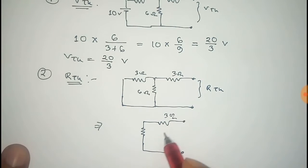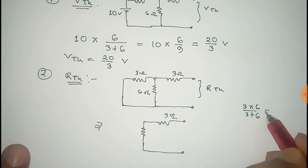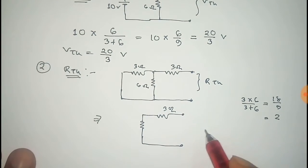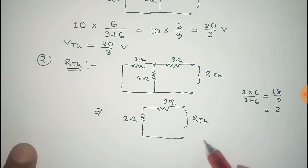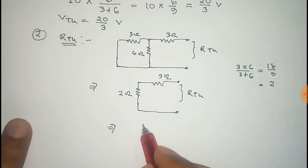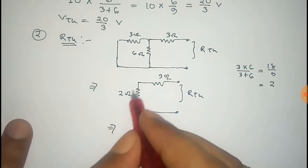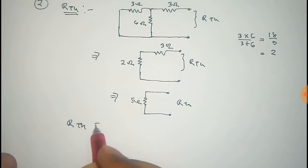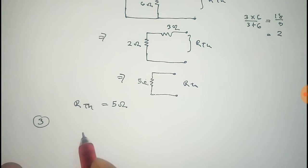There is a 3 ohm resistor, and the equivalent resistance of 3 ohm and 6 ohm in parallel will be 3 into 6 divided by 3 plus 6, that equals 18 by 9, which equals 2 ohm. So the equivalent resistance is 2 ohm, and that is the Thevenin resistance. Now this 3 ohm and 2 ohm resistor are in series connection, so we replace them with a single resistor of value 3 plus 2, that is 5 ohm. Thus we get the Thevenin resistance, that is 5 ohm.